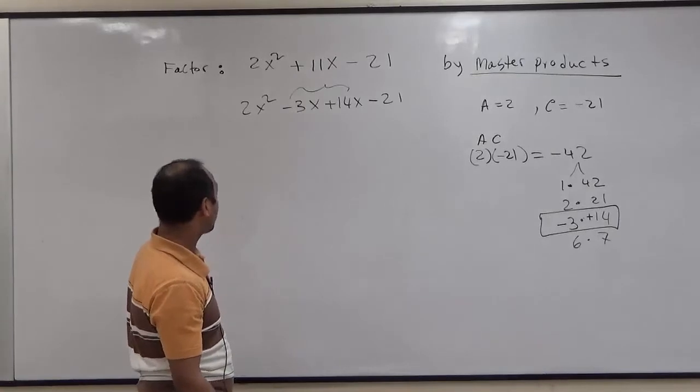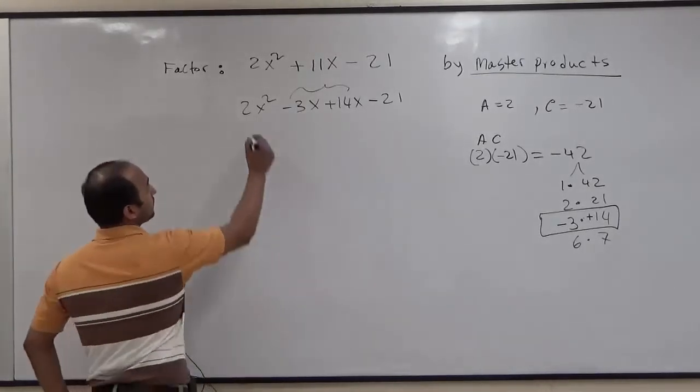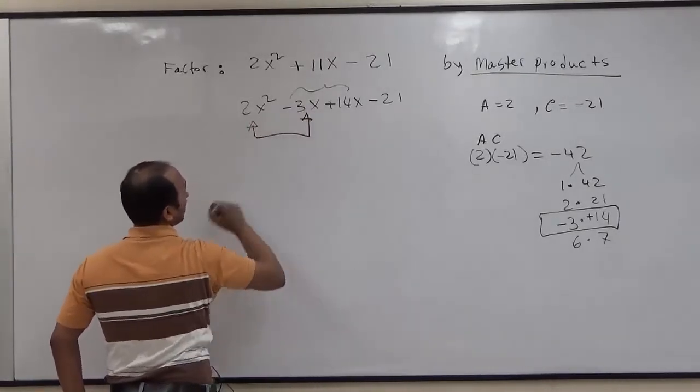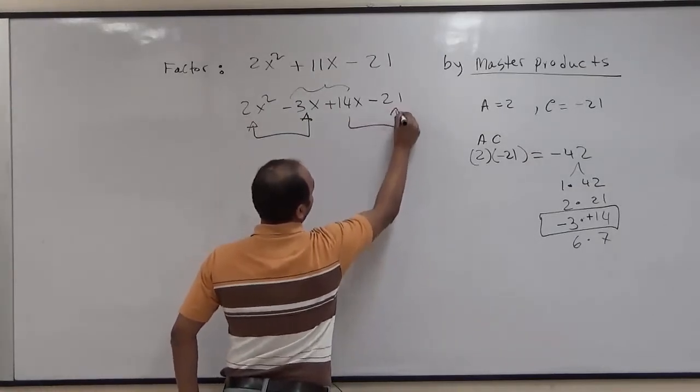So we have four terms. We'll factor by grouping. First two terms, we'll make a first group. Last two terms, we'll make a second group.